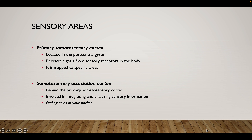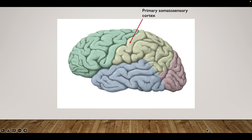We'll see the same thing with our vision and with our sense of hearing as well, with auditory cortexes. Here's our primary somatosensory cortex again in this post-central gyrus, just posterior to our central sulcus. And right behind that is where we would have our somatosensory association cortex, just behind this primary cortex.